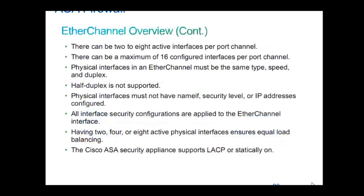When you have EtherChannel, you can have up to 16 links in the bundle. ASA supports up to 16 links in the bundle, but only 8 will be active — the other 8 will be standby. You may ask why you need 16 in the bundle. The idea is you can have 1 or 2 extra links so that if one among the 8 goes down, you still have 8 active links. You can have up to 16 per port channel.